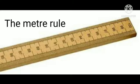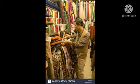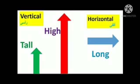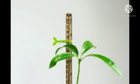The meter rule. The meter rule helps us to measure length correctly. You can see the meter rule when you buy cloth. The meter rule is used to measure long or tall things. For example, the length of this table is more than 1 meter, and the height of this plant is about 1 meter.